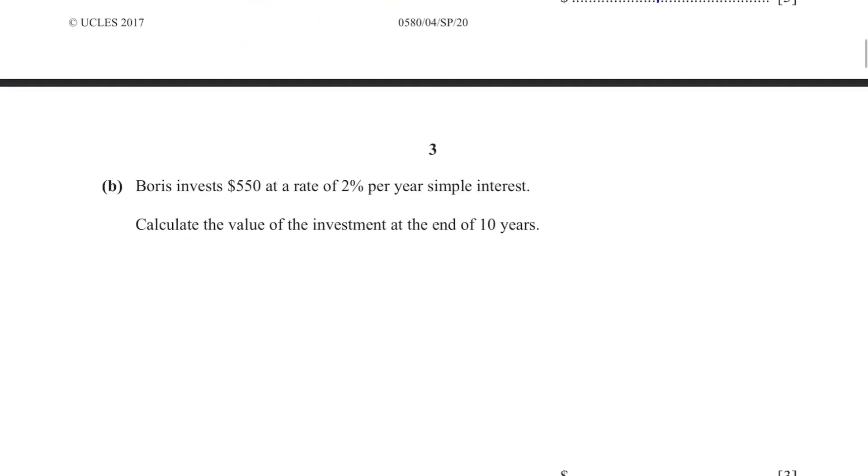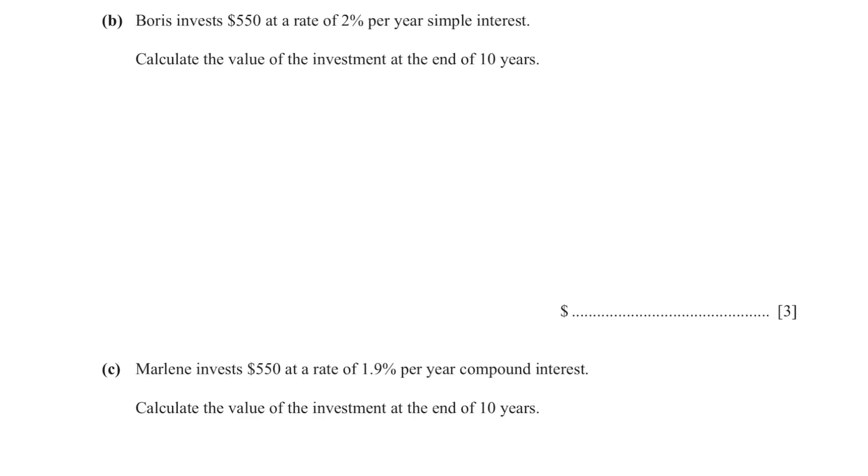Part B. Borrowies invest $550 at a rate of 2% per year simple interest. Calculate the value of the investment at the end of 10 years. To find the amount of interest at the end of 10 years, multiply the initial amount with the rate, then multiply it with the number of years. Then add this value to the initial amount to find the total value.